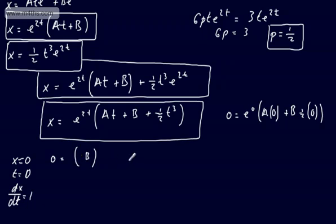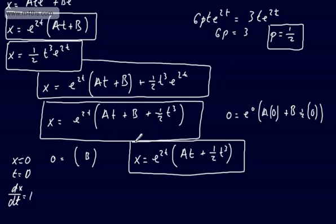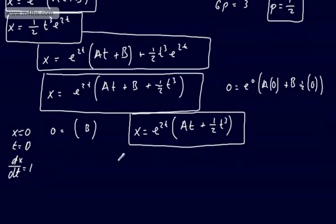Rewriting with b = 0, we have x = e^(2t)(at + (1/2)t³). We also have the initial condition dx/dt = 1 when t = 0, so we need to find dx/dt.